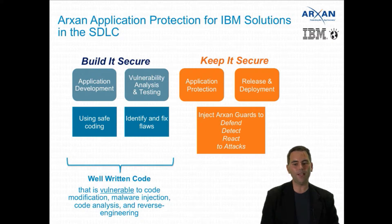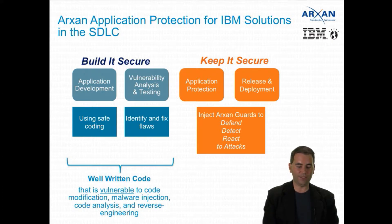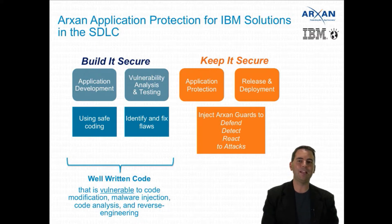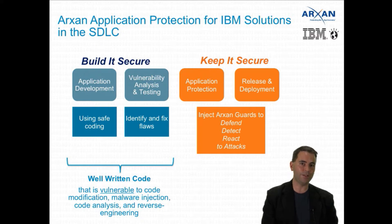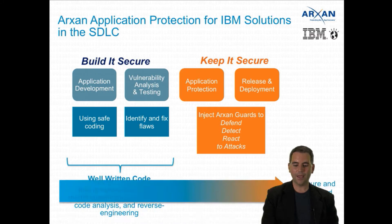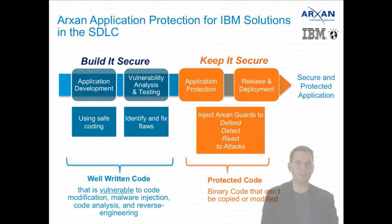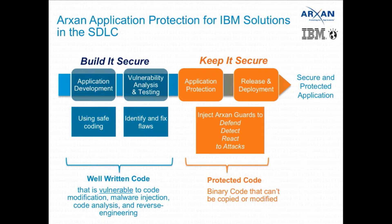What you must do is keep your application secure after you've written it securely, while it's deployed within a mobile environment out in the wild. We do this through ArcSan application protection for IBM solutions. This generally happens during the release stage, and we inject the ArcSan guards, which are tiny pieces of code, into your final binary. It allows the binary to defend itself against static and dynamic analysis, as well as code modification or code injection. Together, when we build it secure and keep it secure, we have an application which is safe to run within a mobile space.